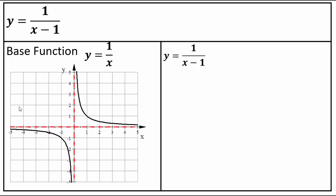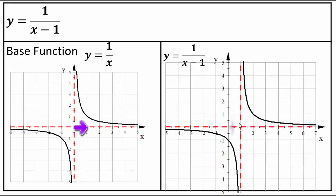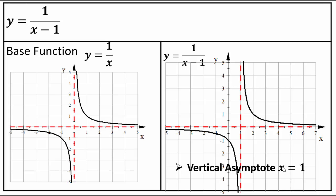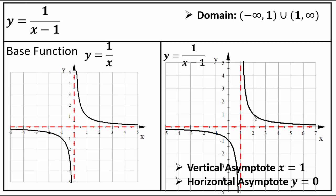We're replacing x with x minus 1, which shifts the graph 1 to the right. Before, asymptotes were x equals 0 and y equals 0. Shifting right 1: the horizontal asymptote y equals 0 doesn't change, but the vertical asymptote moves from x equals 0 to x equals 1. Domain is (-∞, 1) ∪ (1, ∞) and range is (-∞, 0) ∪ (0, ∞), since the asymptotes contribute to domain and range.